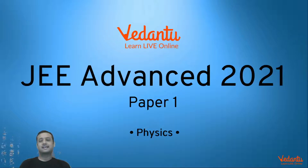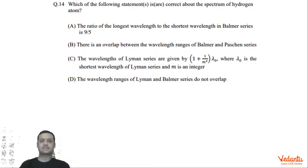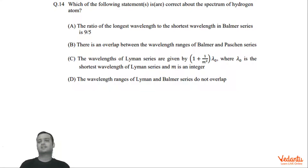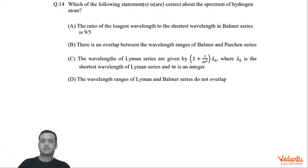Let's see this question that came in JEE Advanced Paper 1 Physics in the year 2021. The question is from the topic of hydrogen spectrum — not a very difficult question. This required simple calculations and most students would have done this quite easily, although one of the options was tricky.